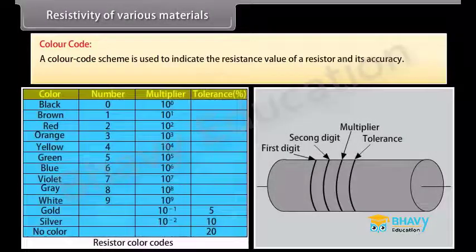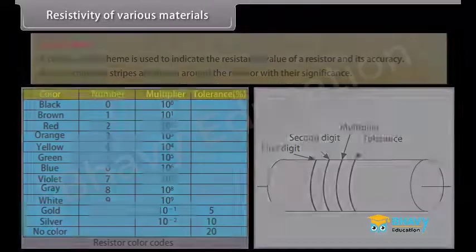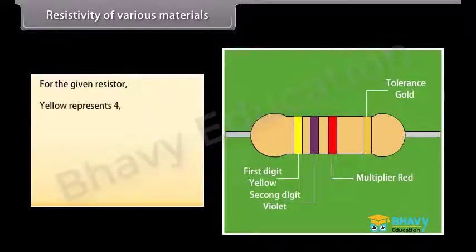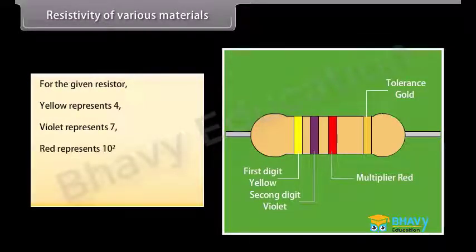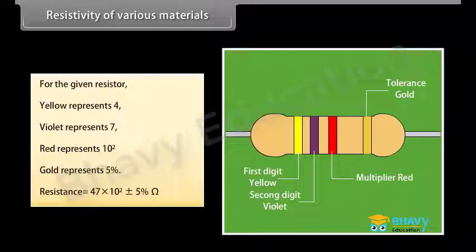A color code scheme is used to indicate the resistance value of a resistor and its accuracy. A set of colored stripes are drawn around the resistor. For example, for a given resistor: yellow represents 4, violet represents 7, red represents 10 raised to the power 2, and gold represents 5% tolerance. The total resistance is therefore 47 into 10 raised to the power 2 ohm with 5% tolerance.